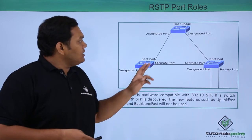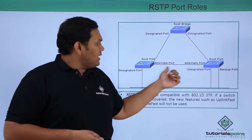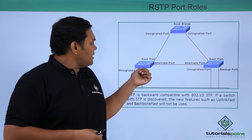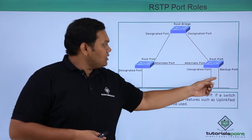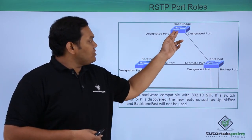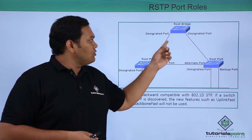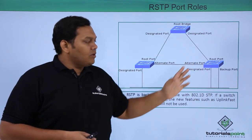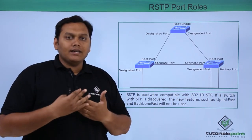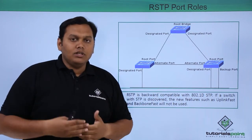In the topology diagram, you can see the root bridge with root ports on connected switches. There is also an alternative port link shown. When a designated port connects to a backup port on one side, that designated port connects to the backup port on the other side as well. Whenever the root bridge goes down, the alternative port is used to maintain connectivity, though the primary path through the designated ports is always preferred for traffic.